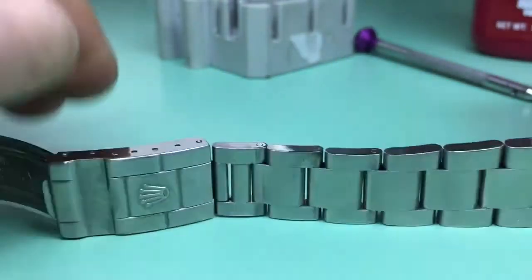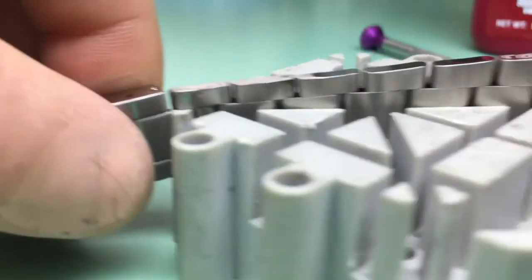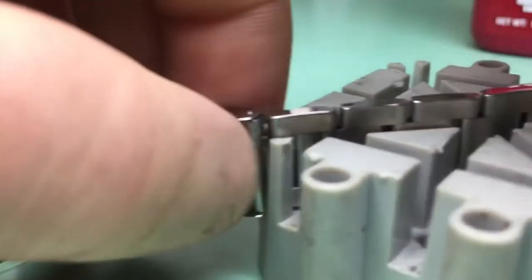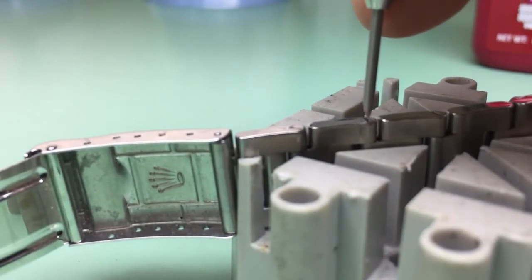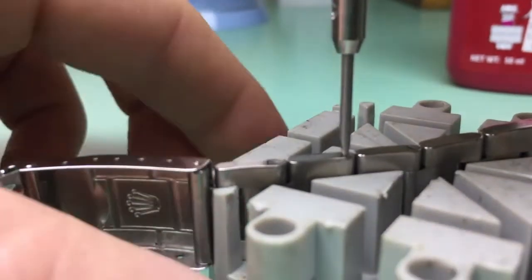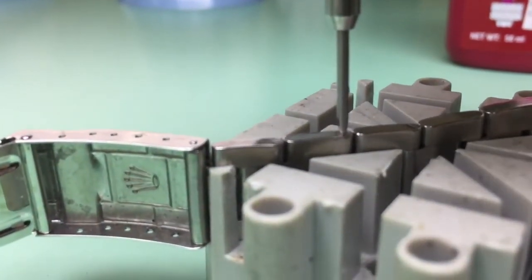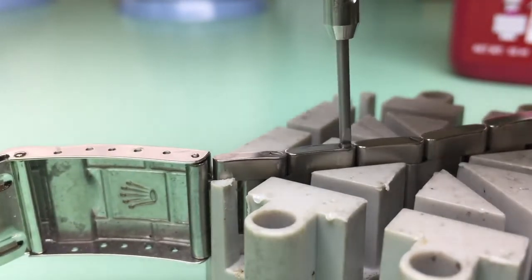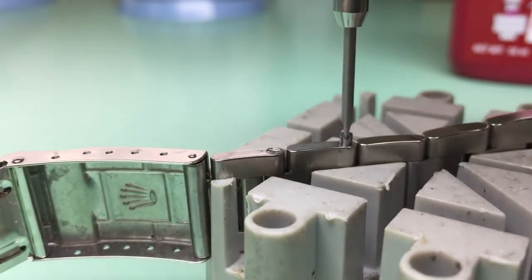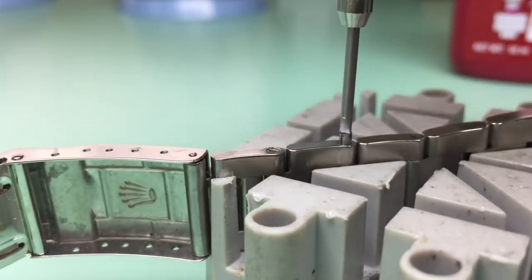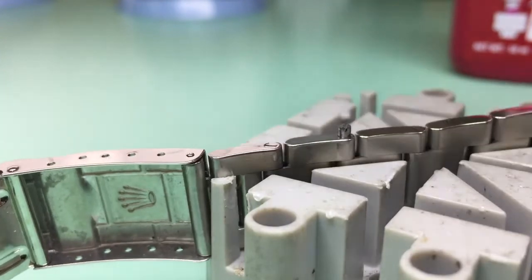So now once our bracelet is done, we can put it in our bracelet block and unscrew the screw nice and easily. We want to have good downward pressure and twist, and twist, and twist. Now do you hear that? That's how we know the screw is out.